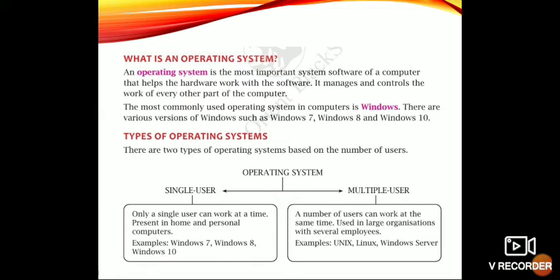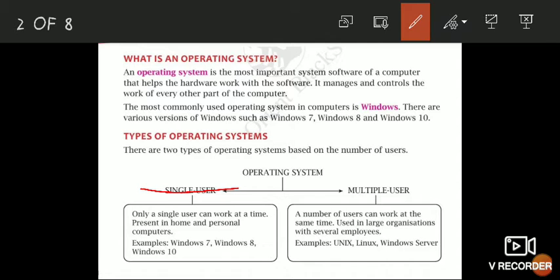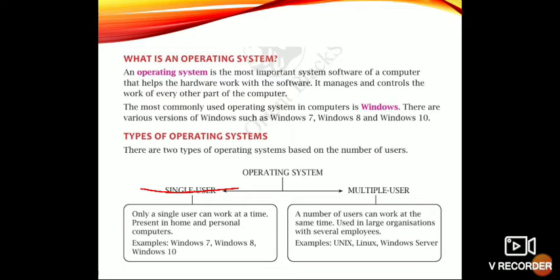The first type is single user. Only a single user can work at a time. It is present in home and personal computers. Only one user can use the computer at one time. Examples are Windows 7, Windows 8, and Windows 10.